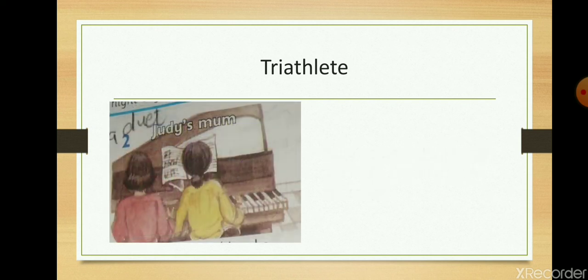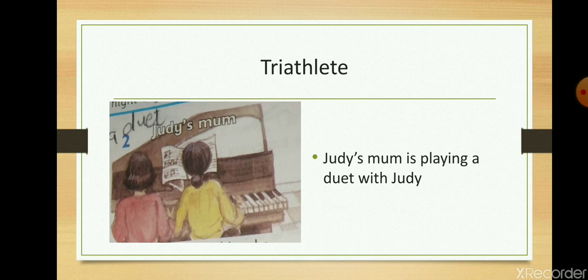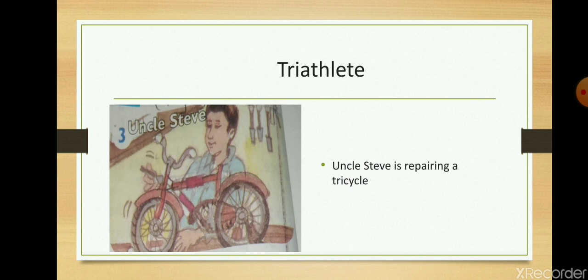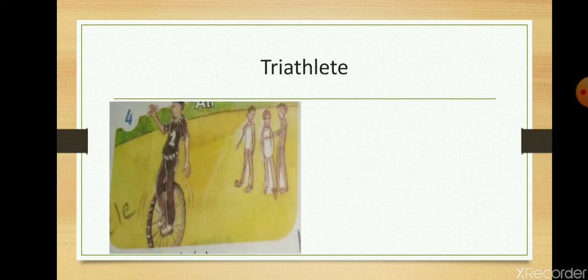The next picture is Joe's mum. Judy's mom is playing a duet with Judy. Next one is Uncle Steve is repairing a tricycle.